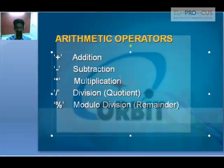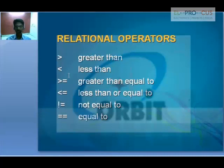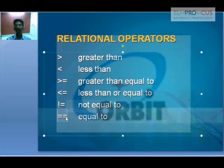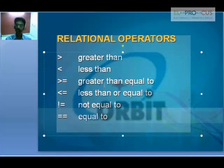After this, we have relational operators: greater than, less than, greater than or equal to, less than or equal to, and not equal to. In C language we represent not equal to as != whereas in maths we strike off the equal to symbol. We also have the equality operator ==. We'll be taking up all these operators in detail when we enter into the programming concepts of C language.